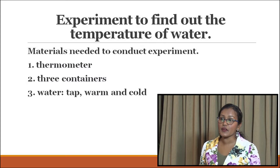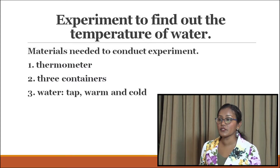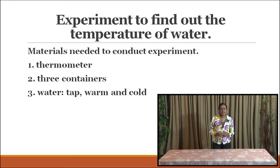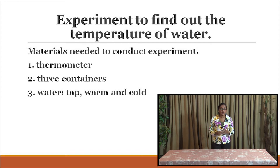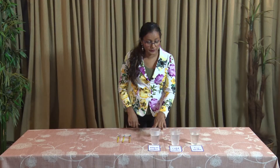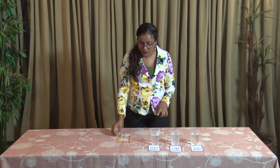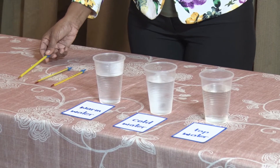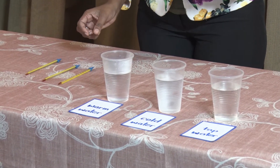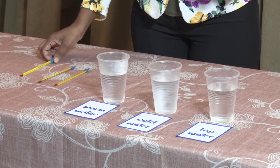An experiment was set up to find out the temperature of water. The materials needed to conduct this experiment were a thermometer, three containers, and water. We collected water from the tap, warm water, and some cold water. We also have three thermometers — one to measure the temperature of each water sample.